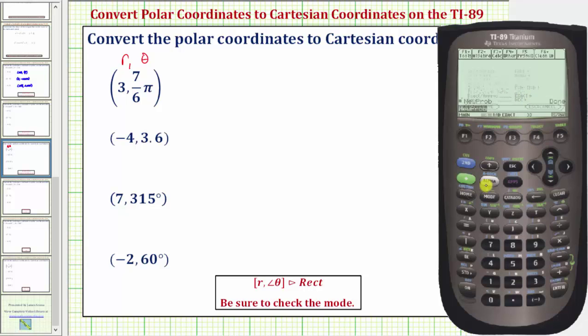Let's go back to the home screen. Now we're going to begin by entering the polar coordinates in square brackets as shown here. So second comma brings up the open square bracket, R is three comma.